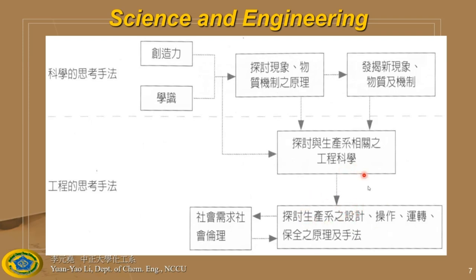You need to design, operate, and make the production safe — like SpaceX rockets by Elon Musk. You make a shuttle and then mass-produce it. But when you do this, you also need to think about the needs of society and ethics — you don't want to steal somebody's knowledge to make your products.